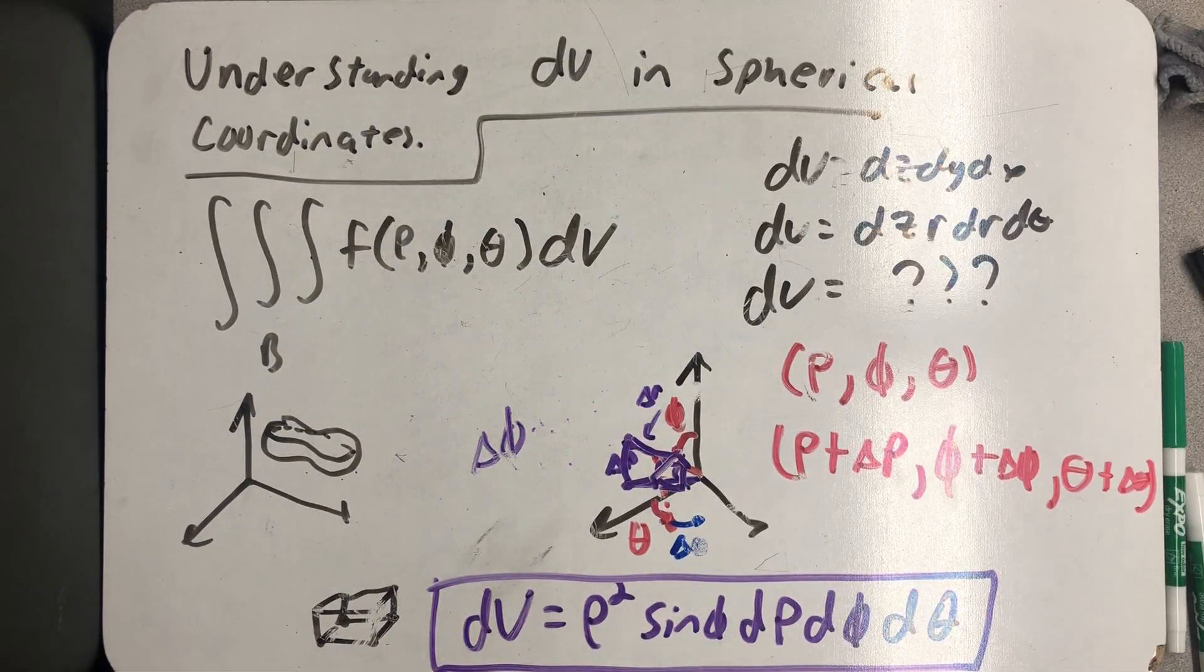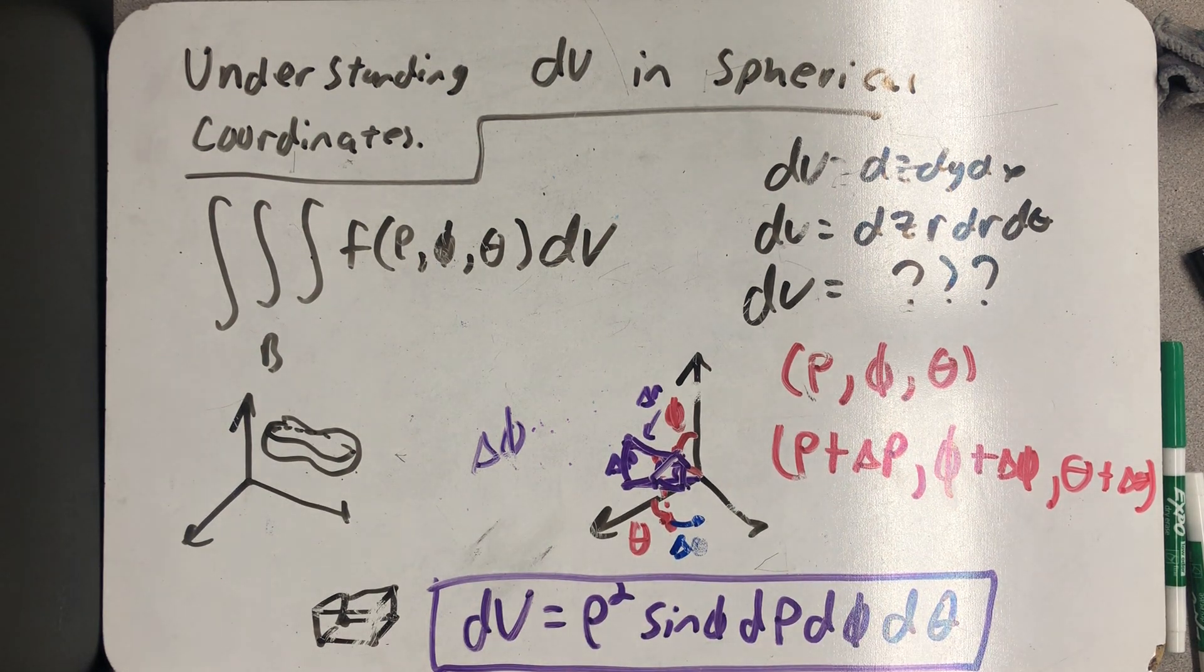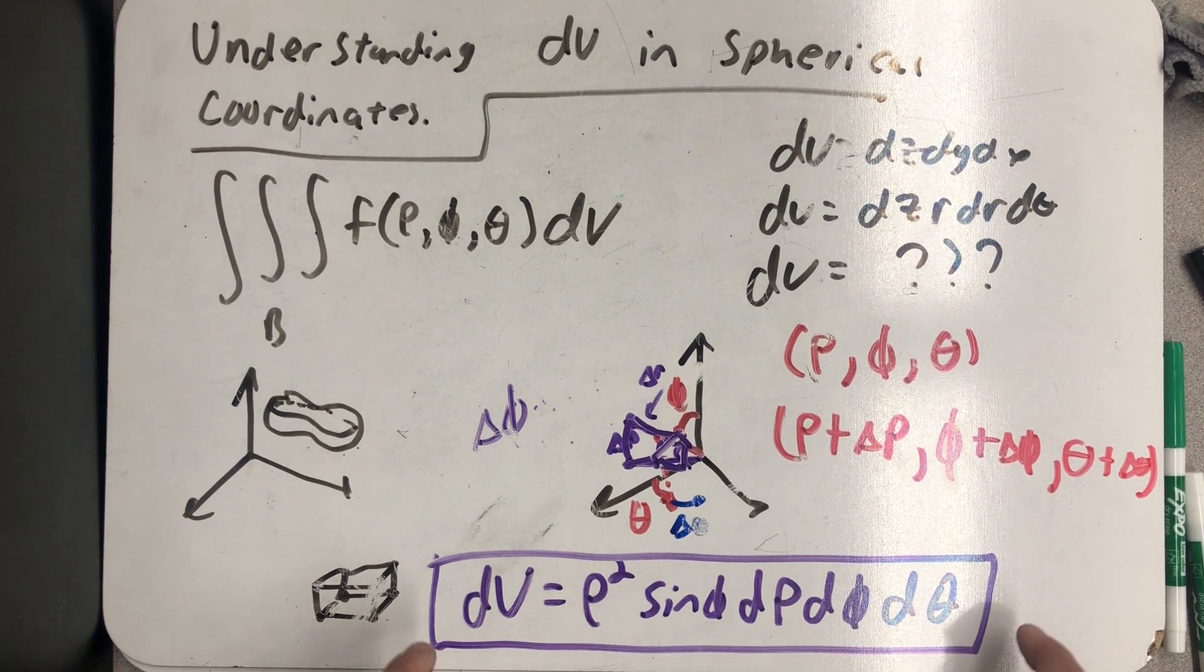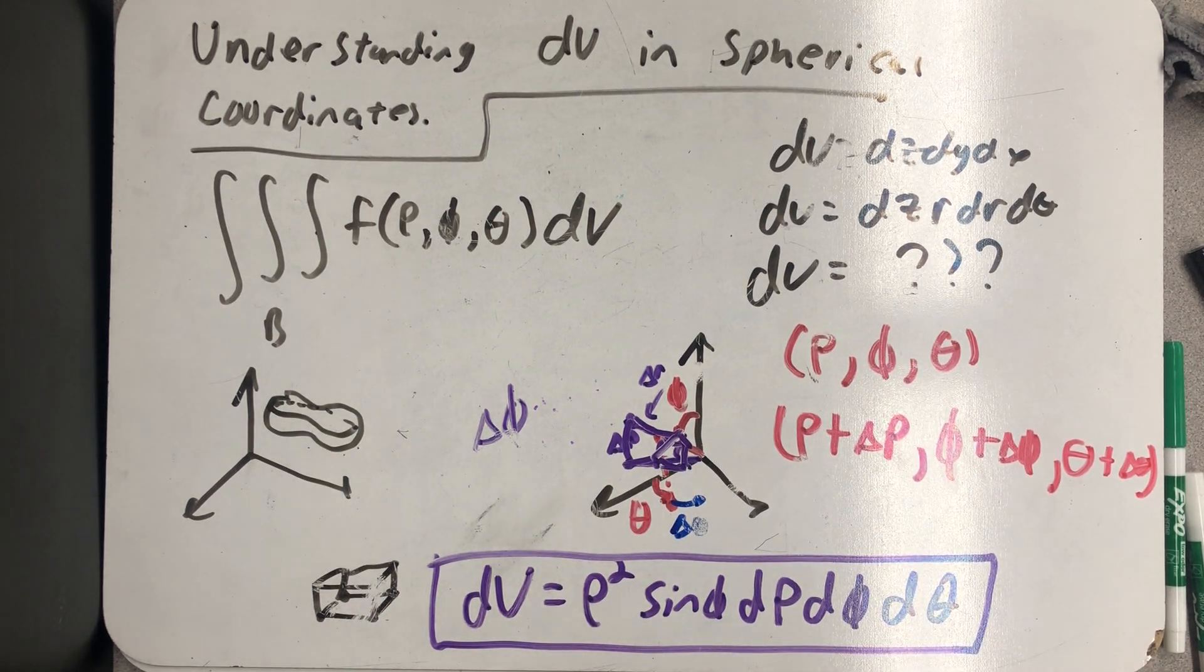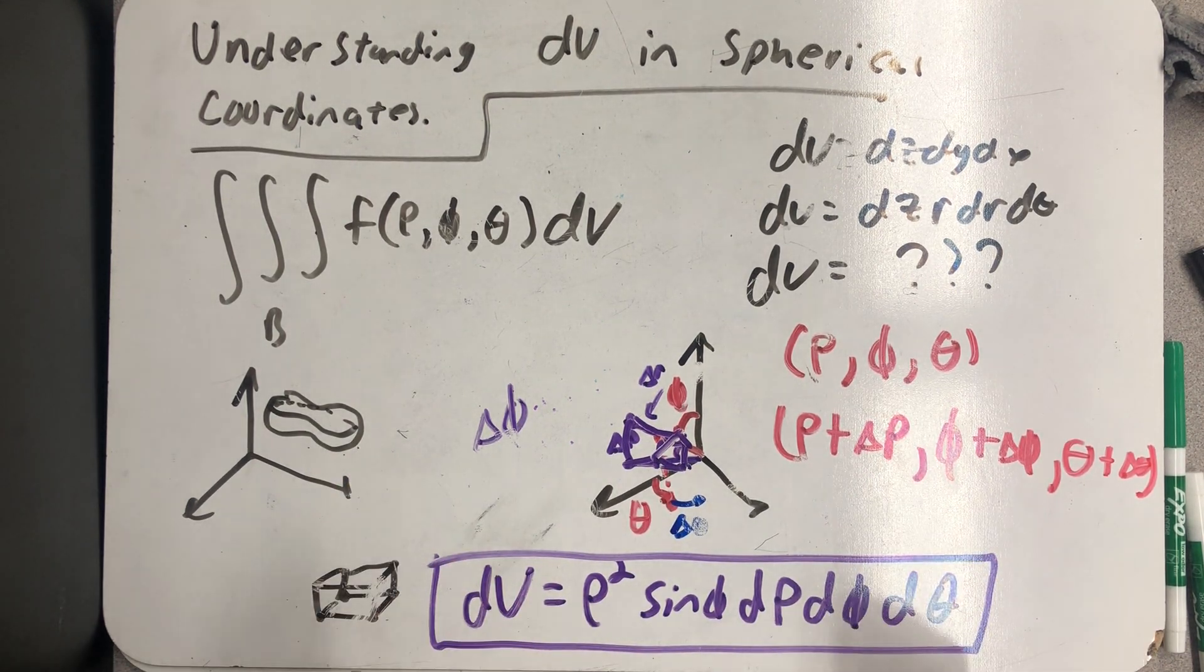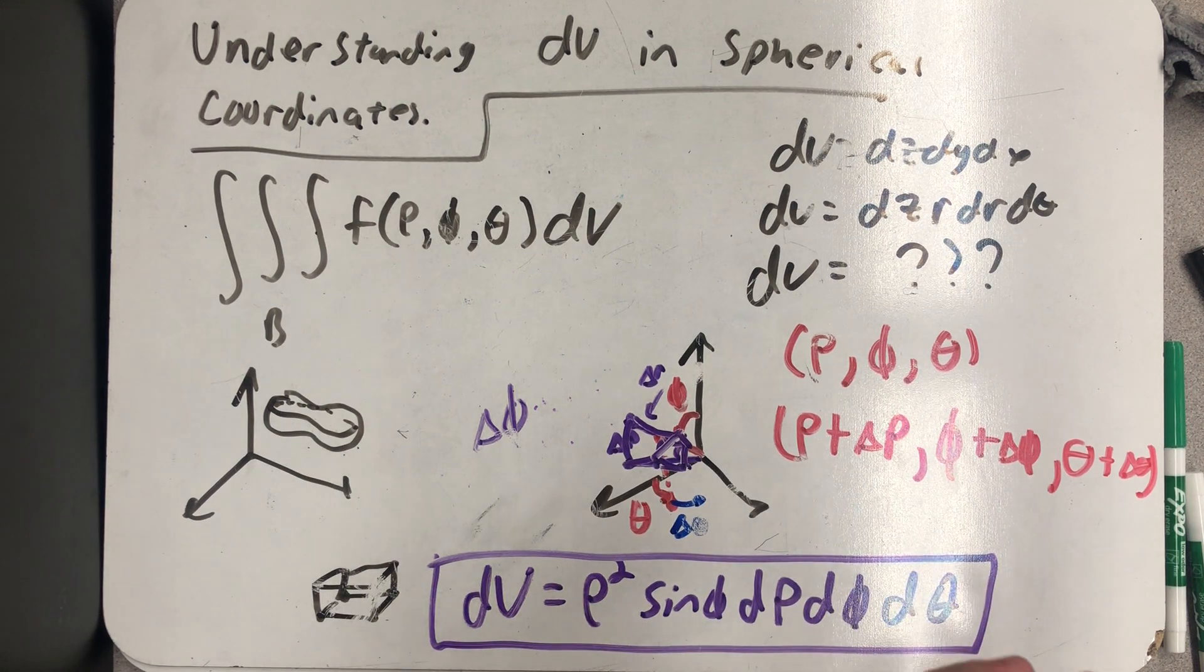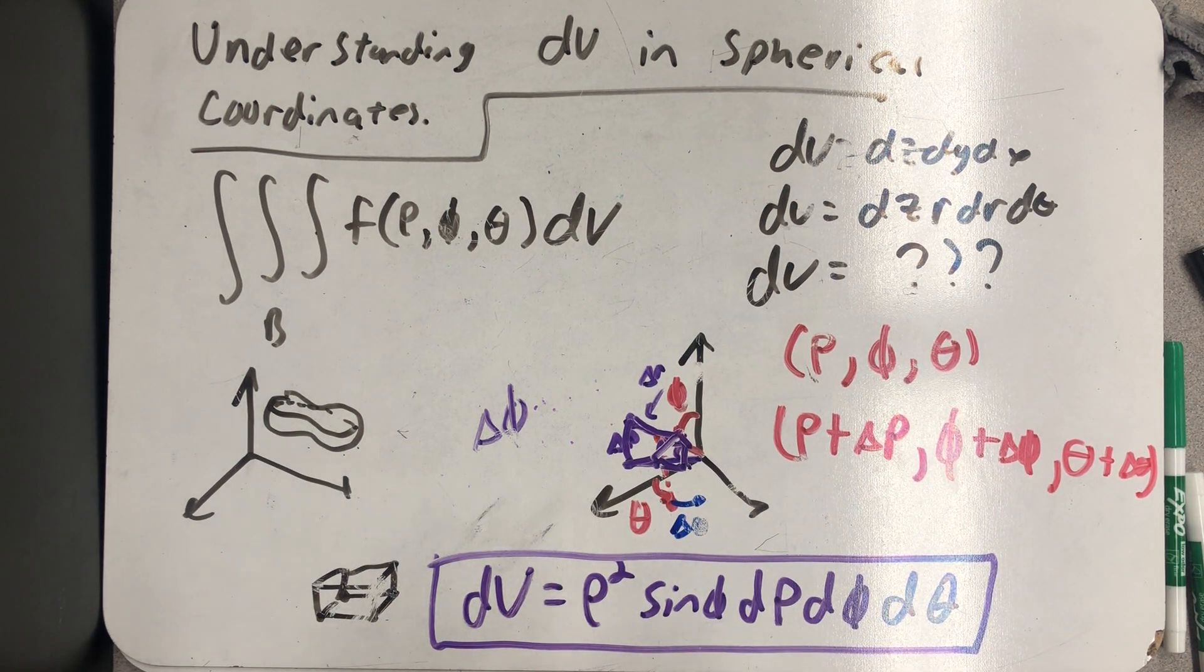In our next unit, when we learn how to do substitutions into multiple integrals, we can actually derive this formula for dV using that method. And so for now, we'll just accept this using this volume argument as the differential operator dV in spherical coordinates.